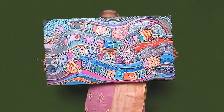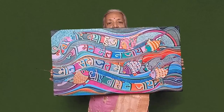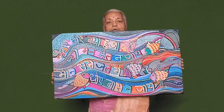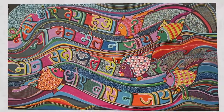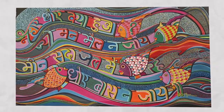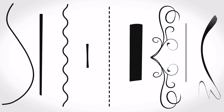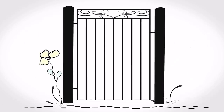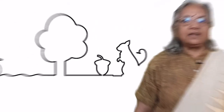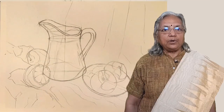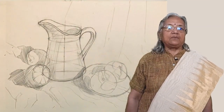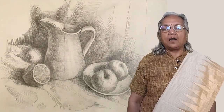Kabir has written: 'Nahaye dhoye kya huwa, joman mail na jaye, meen sada jal me rahe, dhoye baas na jaye.' In this painting, a very good presentation of rhythmical lines has been done. Without lines, there can be no ground division and no objects or shapes can be drawn on the space. This is why lines are so important — they are the building blocks of shapes, and only shapes are responsible to convey the abstract feelings of the artist.